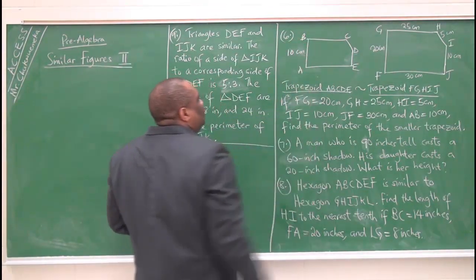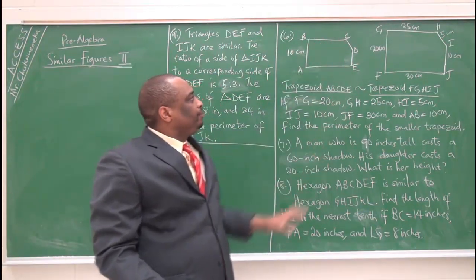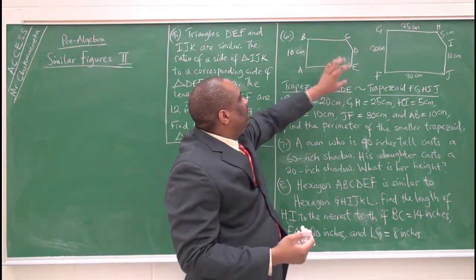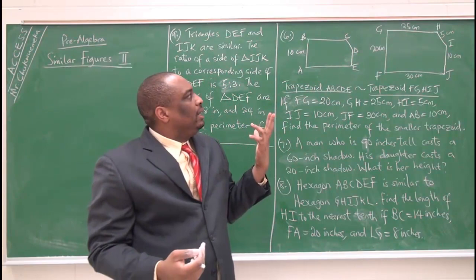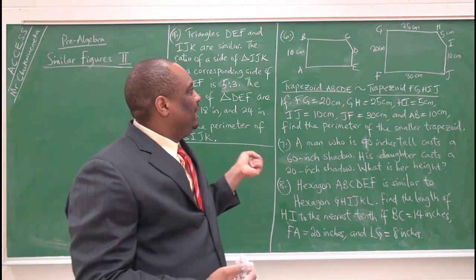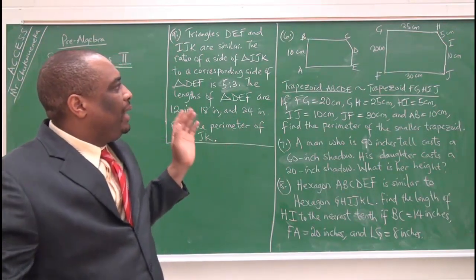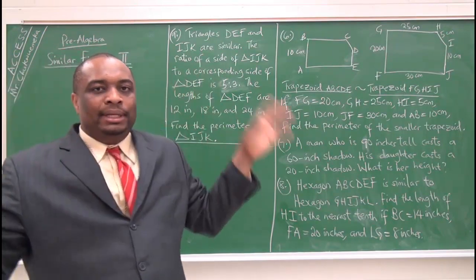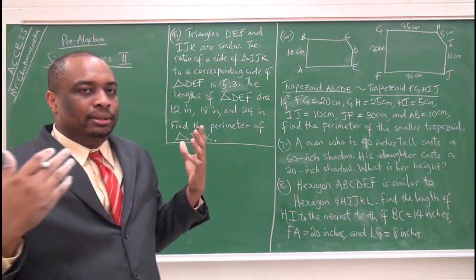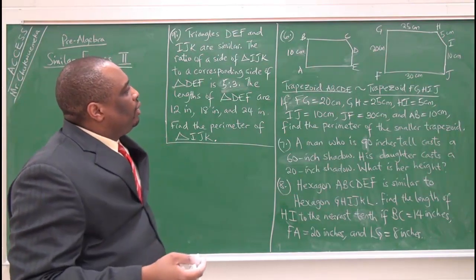This is the small trapezoid, so we have to find all its sides: line segment BC, line segment CD, line segment DE, and line segment AE. Then we add them up, because perimeter means the total distance around — the sum of the total lengths.